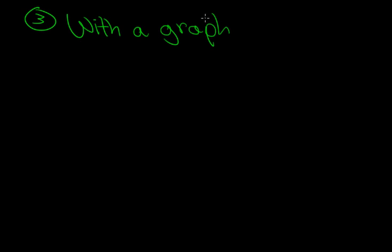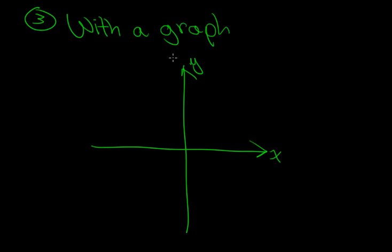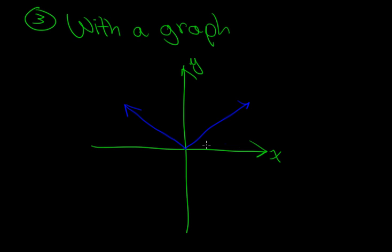The third way Stuart says to represent a function is graphically, through a graph. That is a very good way to represent a function. For example, we have our x and y axes, and let's say we draw an absolute value function — the blue line represents our function. Technically this is a composite function, but we'll get to that later. This is a perfectly good graphical representation of a function.